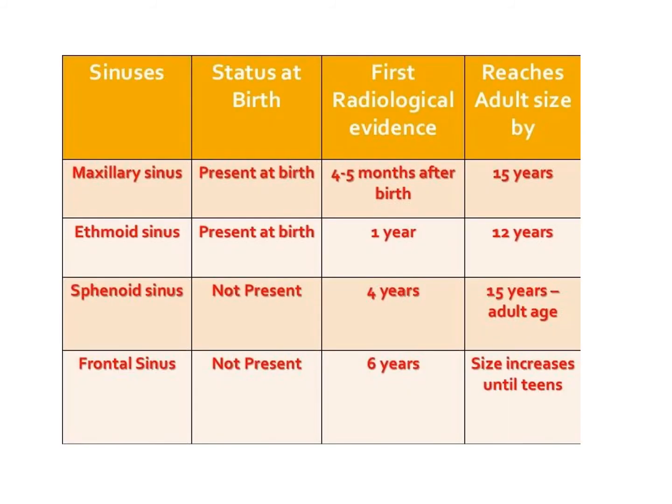Development of paranasal sinuses is important. The maxillary sinus is usually present at birth; the ethmoidal sinus is rudimentary; the sphenoidal and frontal air sinuses are not present at birth. The first radiological evidence of the maxillary sinus is seen four to five months after birth, ethmoidal sinus by one year, sphenoid air sinus by four years, and frontal air sinus by six years.